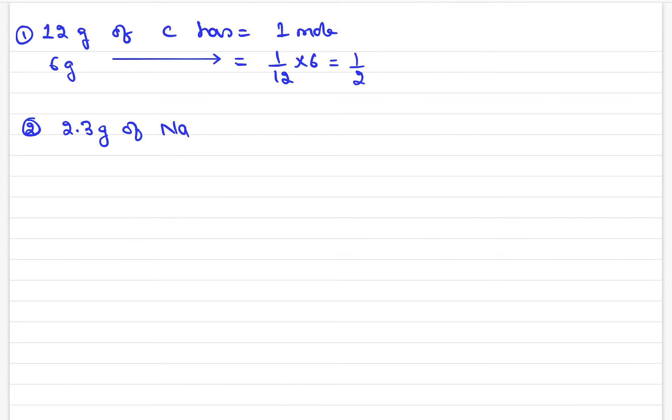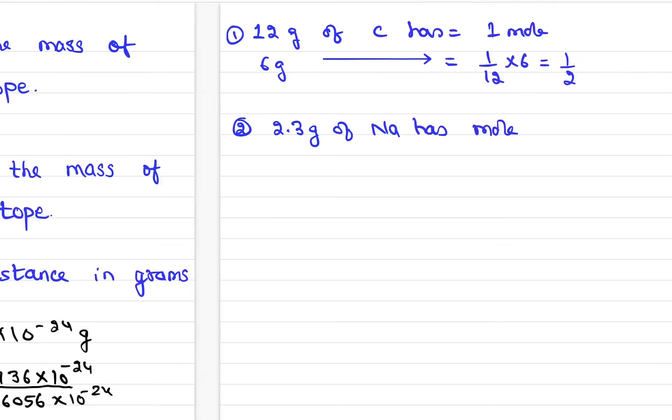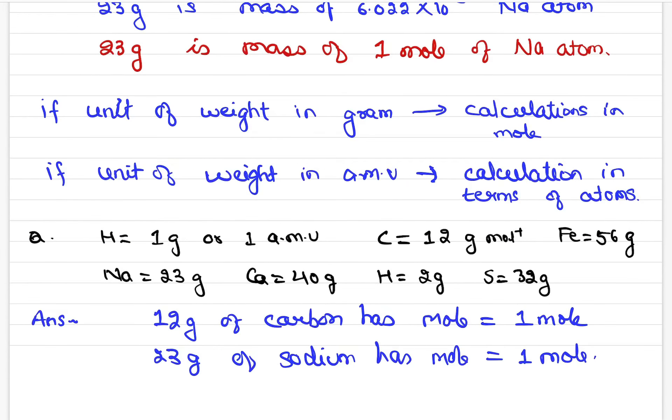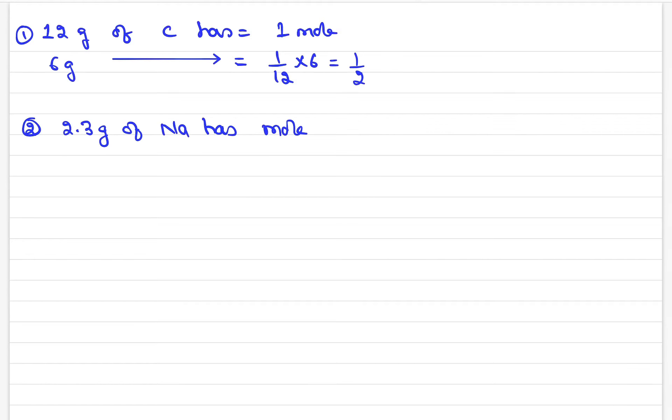Again you remember 23 gram of sodium has mole 1. So 2.3, 1 mole is 1/23 × 2.3. If doubt is 23 gram of sodium has mole, now you can solve it.